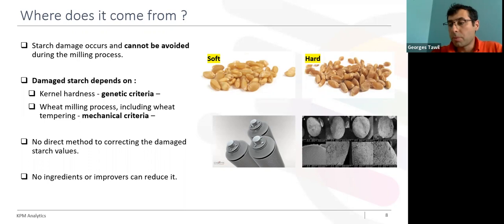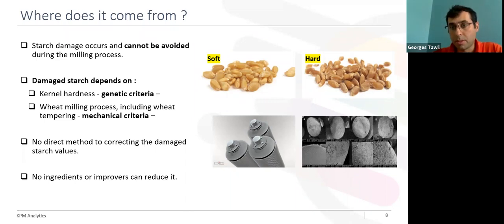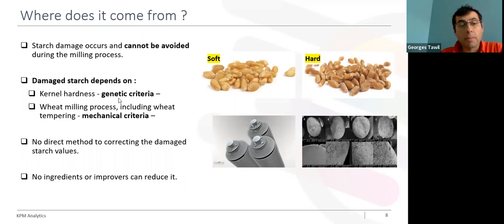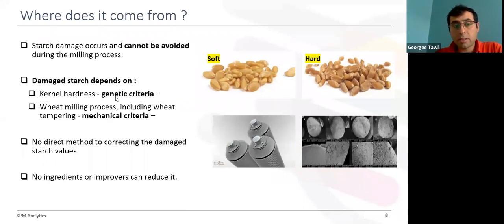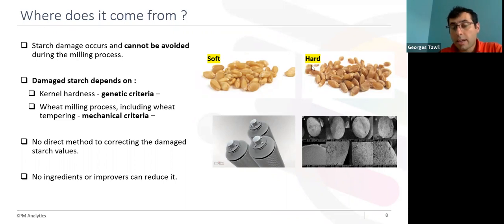Starch damage cannot be avoided during the milling process. The formation of damaged starch depends on two main criteria: the genetic criteria and the mechanical criteria. By genetic criteria, I mean kernel hardness — we know that milling hard wheat will produce more starch damage compared to milling soft wheat.